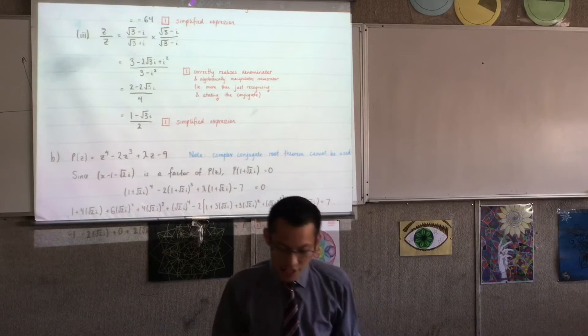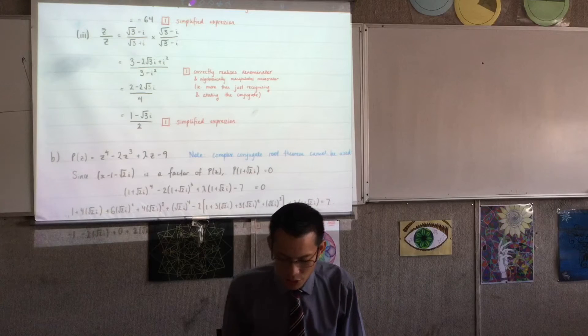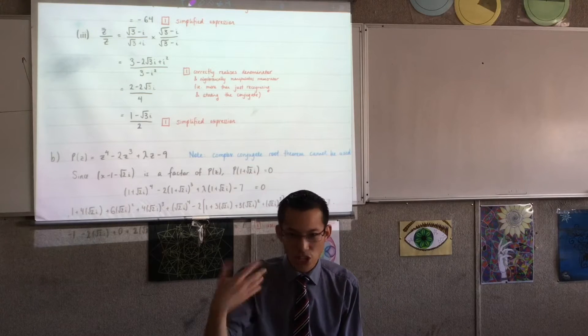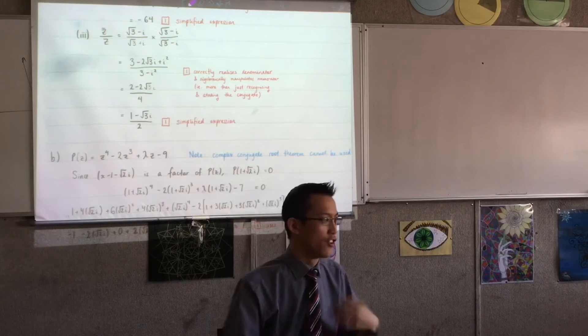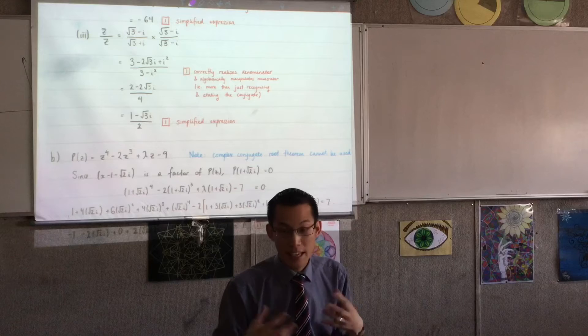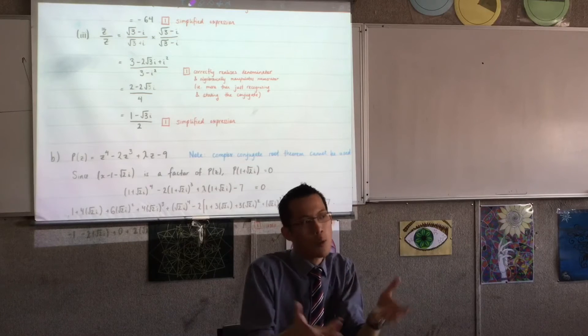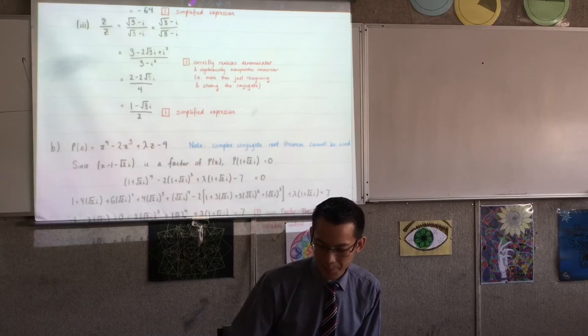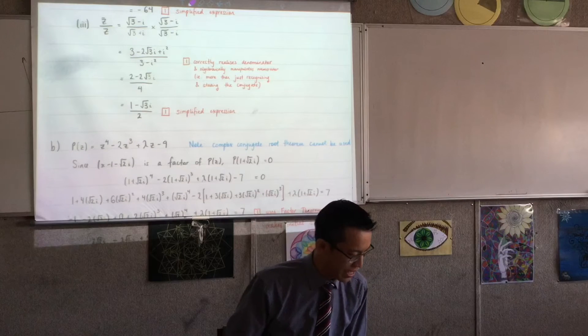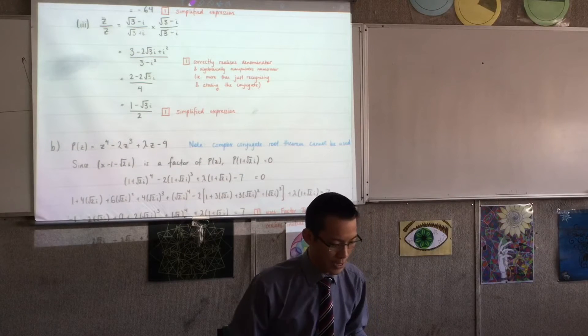So there had to be some valid working, whether it was conversion to polar form or DeMoivre's theorem or the evaluation of the trig functions. You needed a couple to show that you were actually computing something. Part three, if you realize the denominator, then I handed that to you.